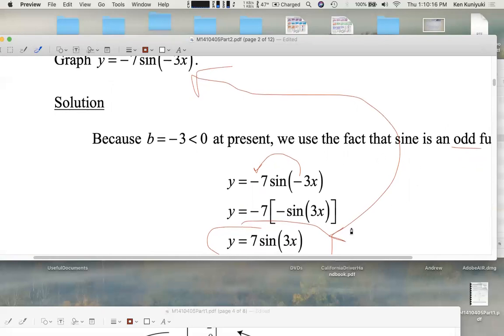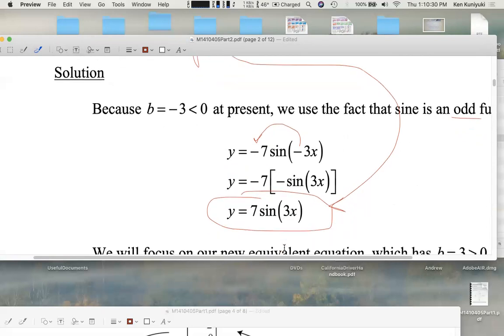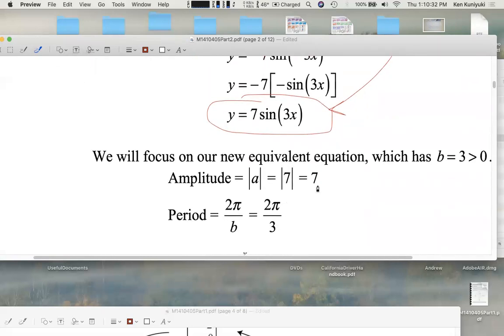And how do we graph this? A equals 7. Amplitude is 7. There's no flipping. A is positive. B equals 3. So we're squeezing in horizontally. We have three cycles now where there used to be one. The amplitude is 7. The period is 2 pi over 3.